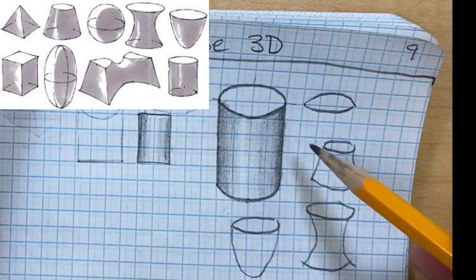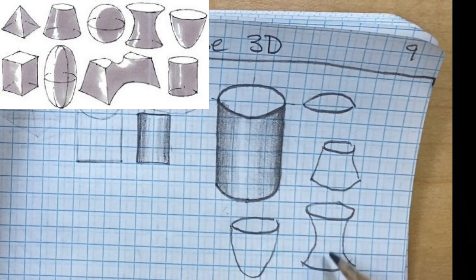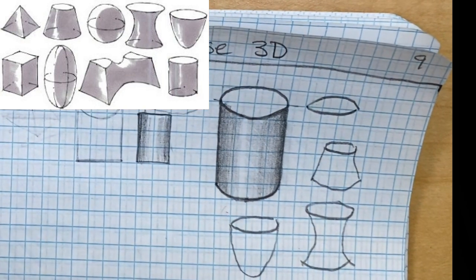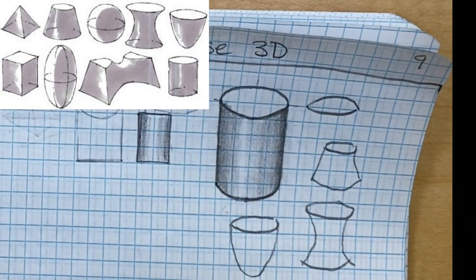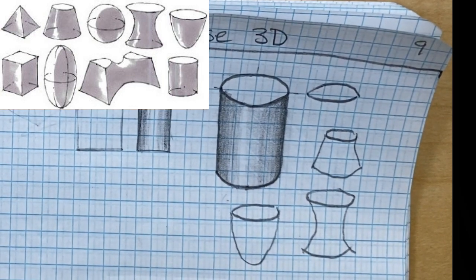So you can do those real quickly now that I've showed you this process to make these other three and then just work on the shading to make them look like they are. If you have any questions, feel free to ask. I'll be walking around and helping students.